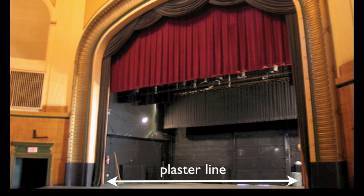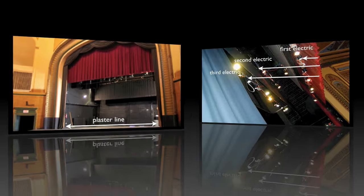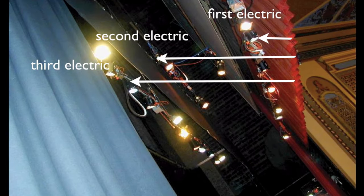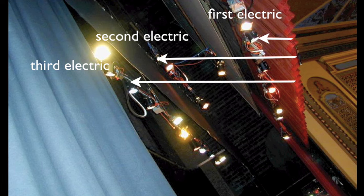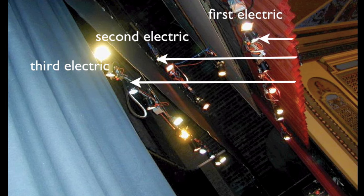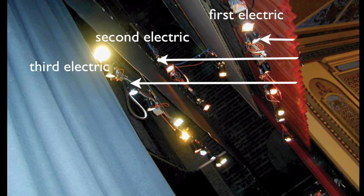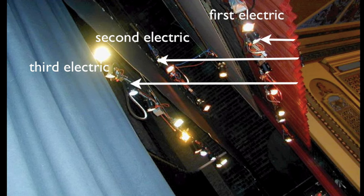In a proscenium theater, all measurements start from the plaster line, which is like the stage's zero. First electric, second electric, third electric, and so on start from the plaster line and go towards the back of the stage.